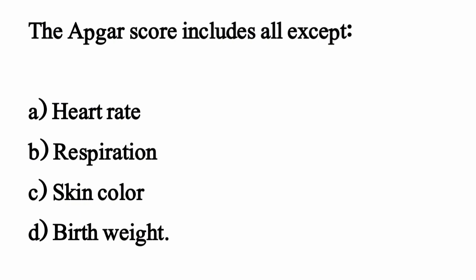The Apgar score includes all except — the correct option is Option D: Birth weight.